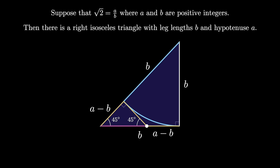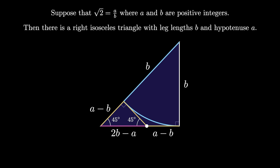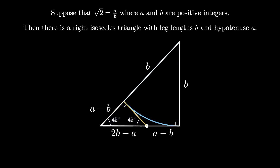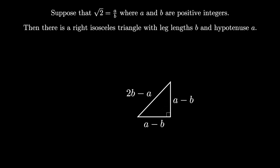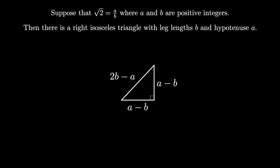Therefore, the hypotenuse of the newly drawn small right isosceles triangle is b minus the quantity a minus b, which is 2b minus a. And here something amazing has happened. We used the original right isosceles triangle to create a smaller right isosceles triangle with legs of length a minus b and hypotenuse 2b minus a.